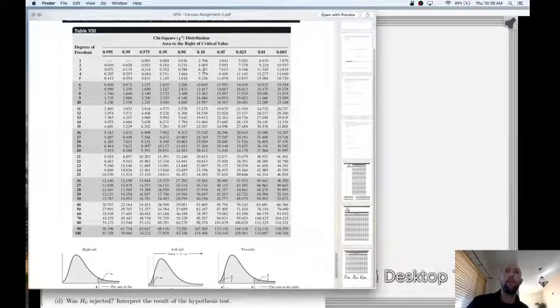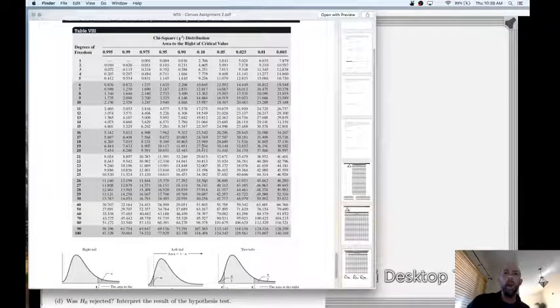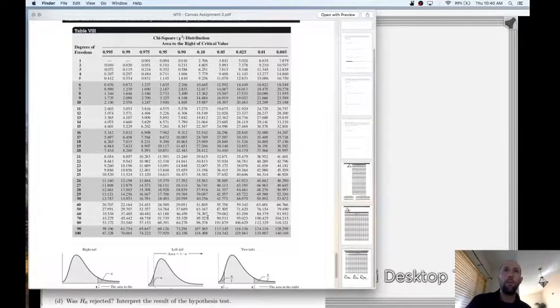But the critical value varies depending upon the degrees of freedom. And in this case we want to use 70 degrees of freedom. So I want to line up this row with 70 degrees of freedom with this column that has 0.1. And when I do that, I'm getting 85.527 and so that is our chi-square critical value for this problem.